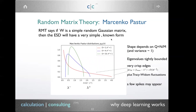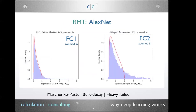In random matrix theory, you typically think about the Marchenko-Pastur distribution for a rectangular matrix. If the weight matrices were simple Gaussian random matrices, the spectral density would have a well-known form depending on the aspect ratio q. For q = 1 you get one shape; for q = 10 you get something almost semicircular. The key point: if W were a simple Gaussian random matrix, you'd see this characteristic shape with crisp edges. But when you look at real data, they don't look like this at all.